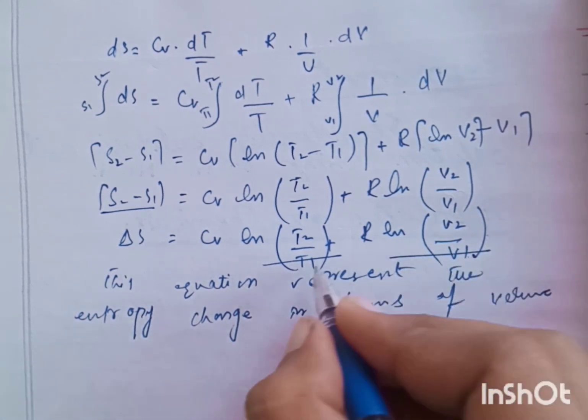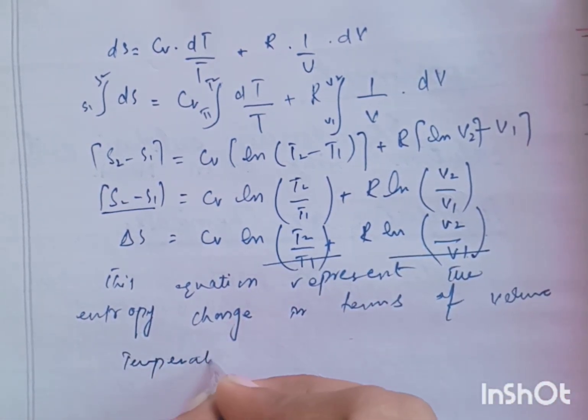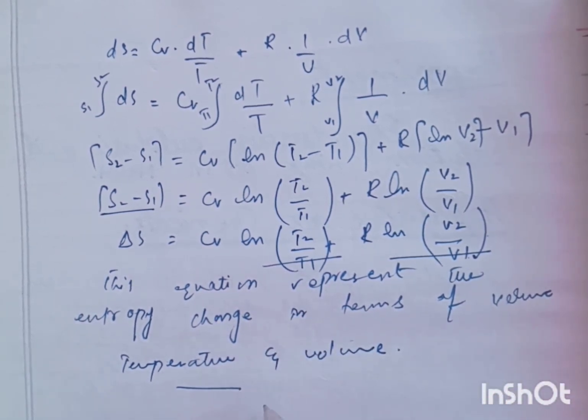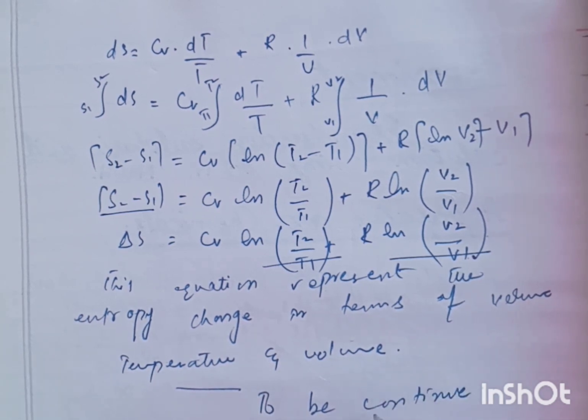As we know, temperature and volume. Now, to be continued. We will take different parameters. This is for temperature and volume. Now, we will discuss pressure and temperature for the same purpose, to know the entropy for ideal gases for pressure and temperature.